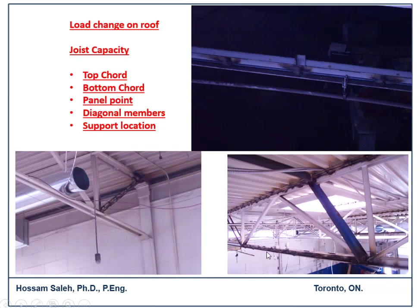Looking at the joist capacity, you can see the support of the roof unit. At the top cord and bottom cord, we added bars inside — additional area of steel — and welded them to the top and bottom cords. You can see there is a bar inside welded to the angle, which provides additional strength. During rehabilitation, you don't always need to add large members; you carry out your study and provide whatever is required to support the additional load.